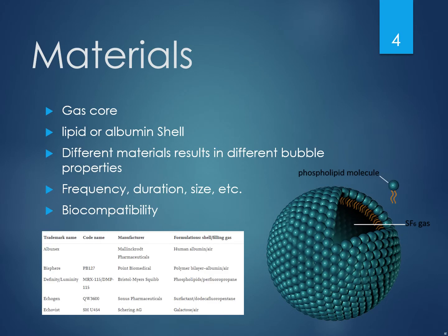Microbubbles used as contrast agents usually consist of a gas core made out of air, nitrogen, or any biocompatible gas, contained in a shell that is usually made out of lipid or albumin in advanced applications. In earlier adaptations of contrast agents in ultrasound, the microbubbles were suspended in a liquid that acts as a surfactant to reduce surface tension and prevent microbubbles from coalescing. The composition of materials used as ultrasound contrast agents is important as it defines many physical and biological properties.